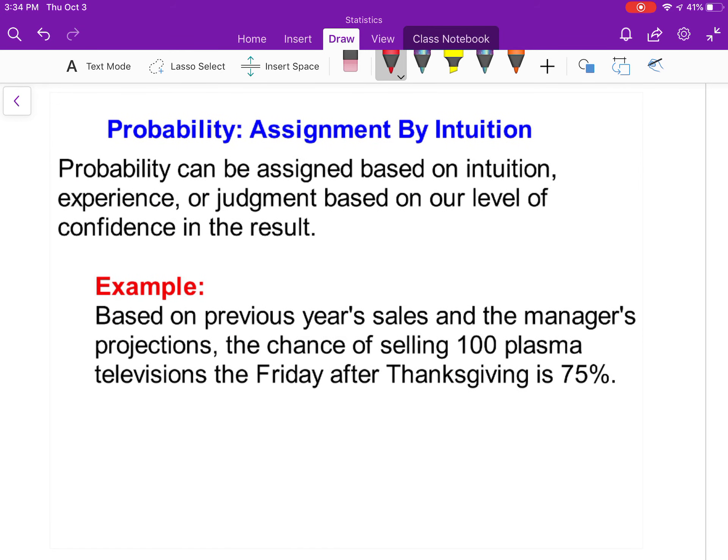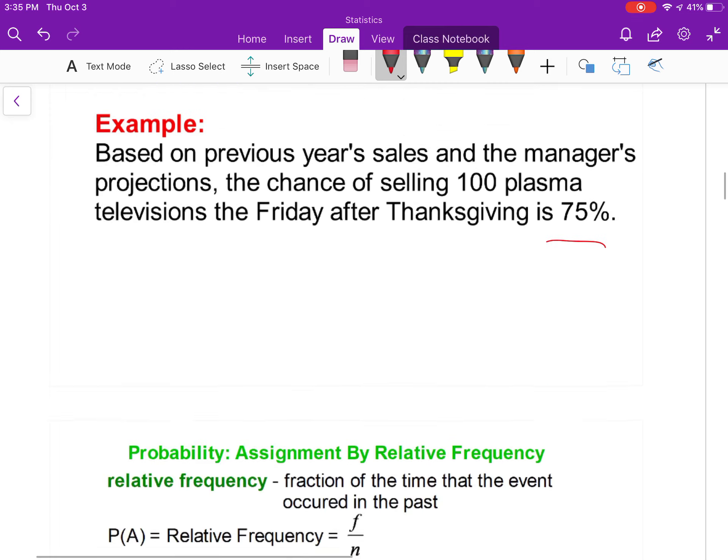Probability assigned by intuition: probability can be measured based on intuition, experience, judgment, or based on a level of confidence in the result. For example, based on previous year sales, the manager projects that the chance of selling 100 plasma TVs the Friday after Thanksgiving is 75%. He's not basing that on data; he just knows they sell a lot of TVs, so he's giving it a high probability.